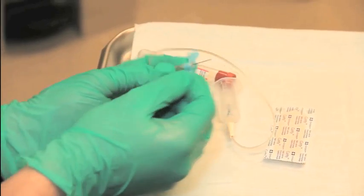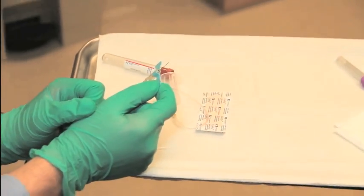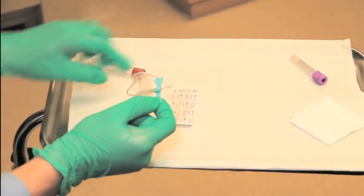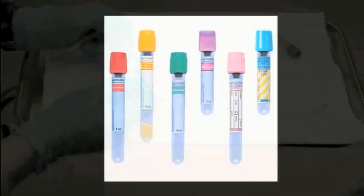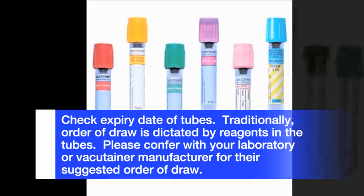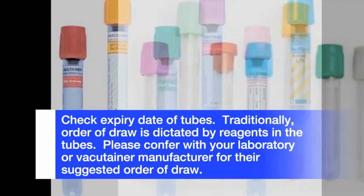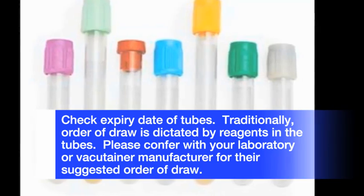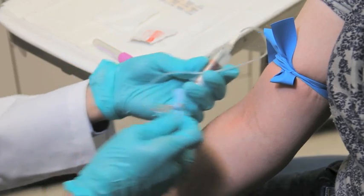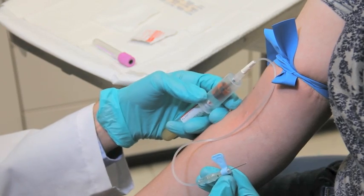Once you identify your target vein, grasp the right wing of the butterfly and your right index finger and thumb with the bevel up. Hold the vacutainer adapter and your first empty tube in your left hand. The number of tubes that need to be filled depends on the type of blood test you will be running. Tubes should be filled in order, starting with your highest priority test first in case you cannot get additional blood. The vacutainer should be loosely in the adapter ready to be punctured, but do not puncture it just yet.